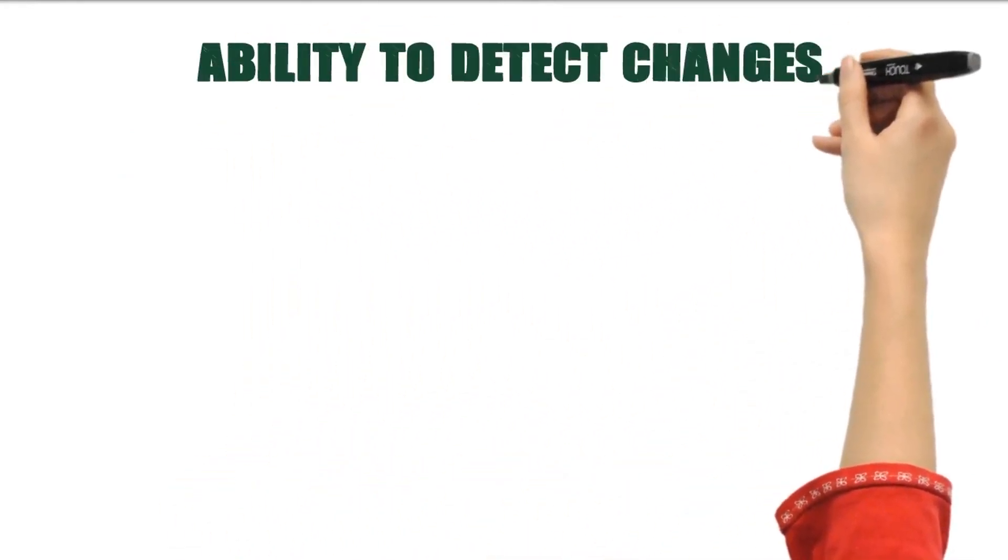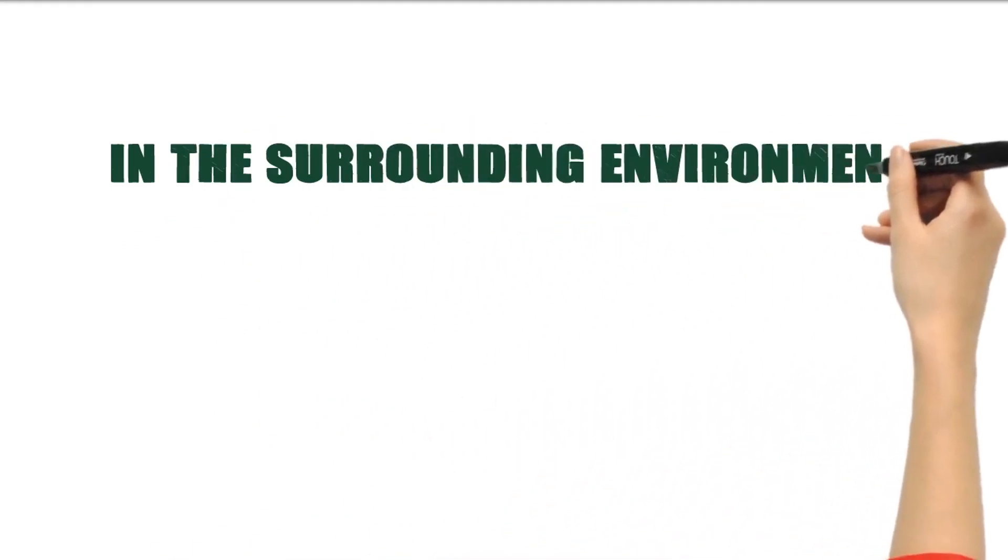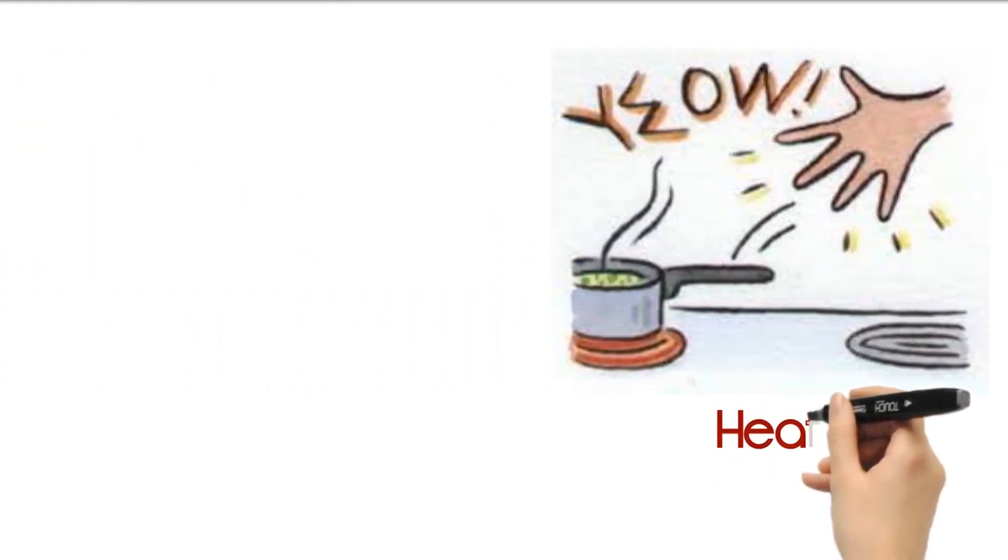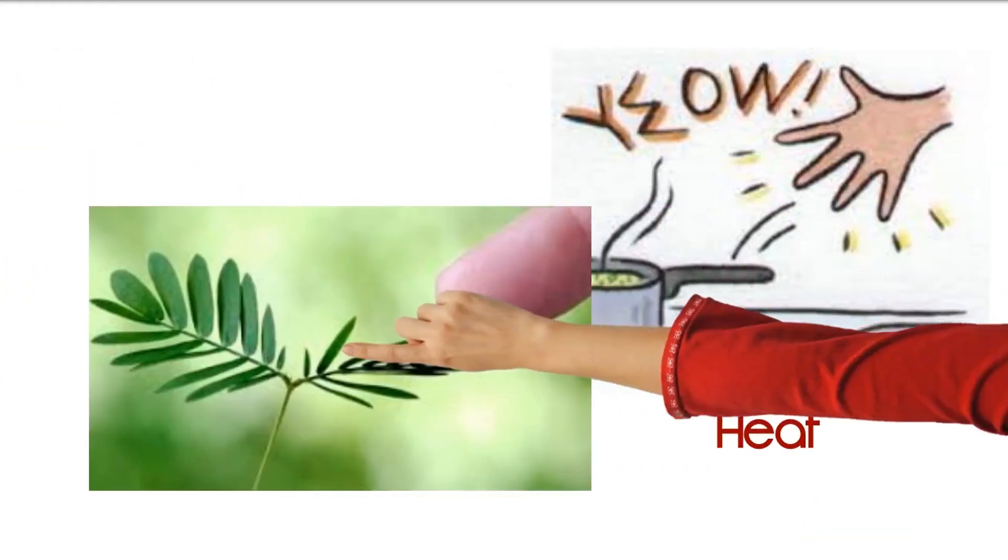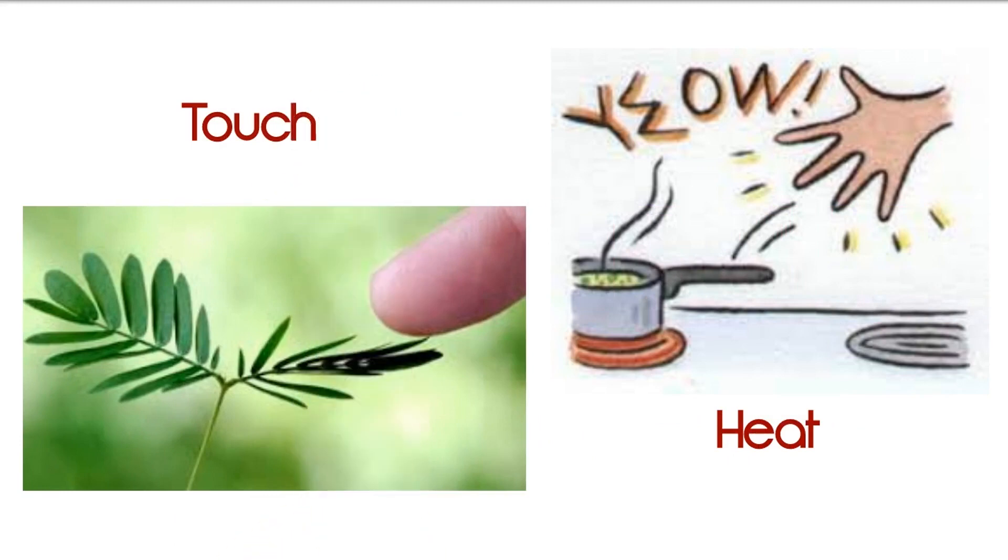All living things are able to respond to stimuli in the external environment. The ability to detect changes in the surrounding environment is called sensitivity. They respond to changes in light, heat, sound, and chemical and mechanical contact.